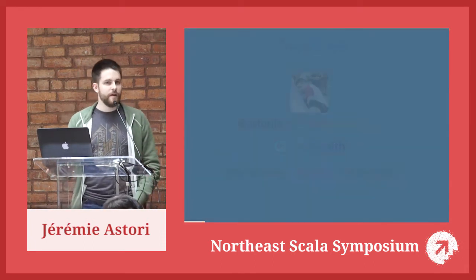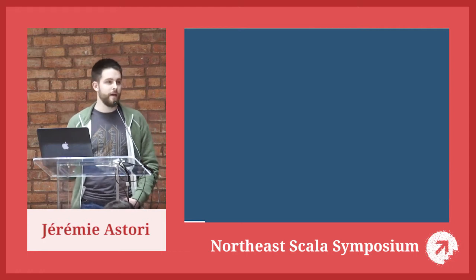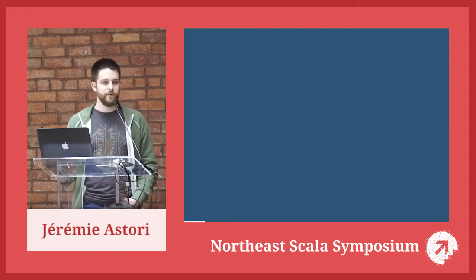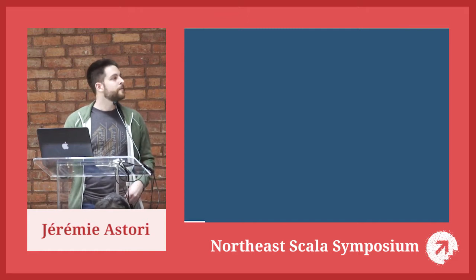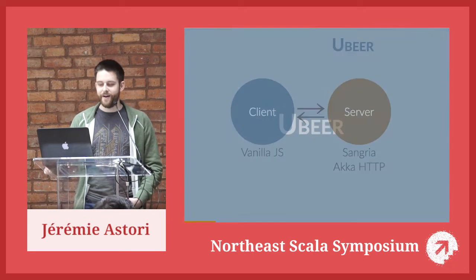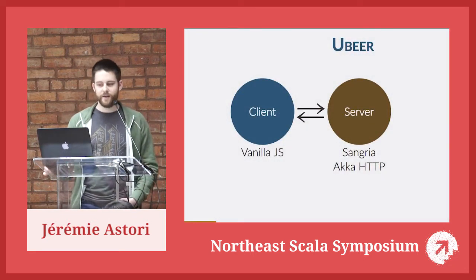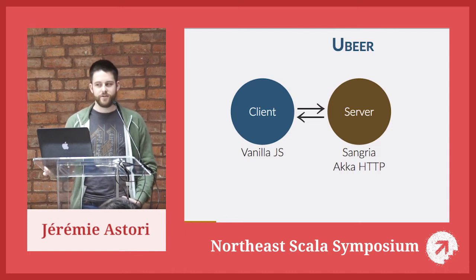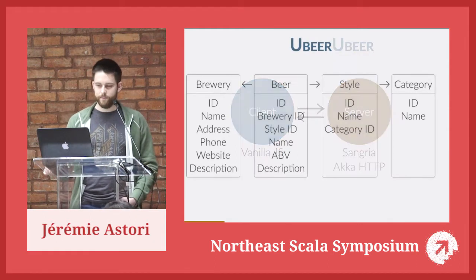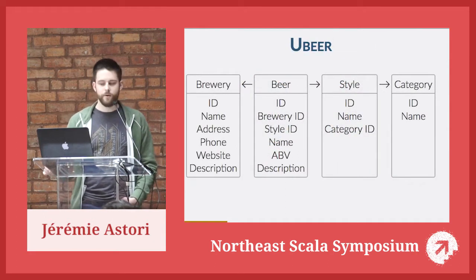To talk about GraphQL, I figured the best way was to find an example. I really like beer, and when I came here, I needed an application to help me locate the breweries around me to know I was in good hands. So I came up with a geolocation-based app — a vanilla JavaScript client application that talks to an HTTP web server that exposes GraphQL endpoints through Sangria, the Scala implementation of GraphQL. The model is very simple: beers, breweries, styles and categories, all loaded from JSON files.